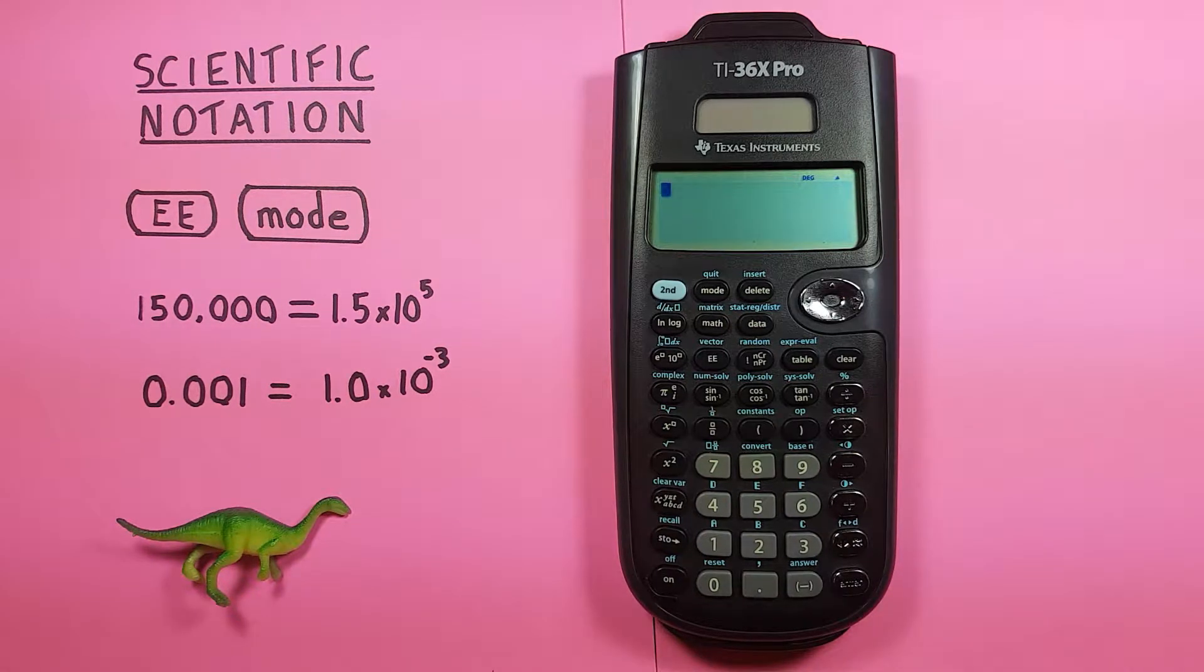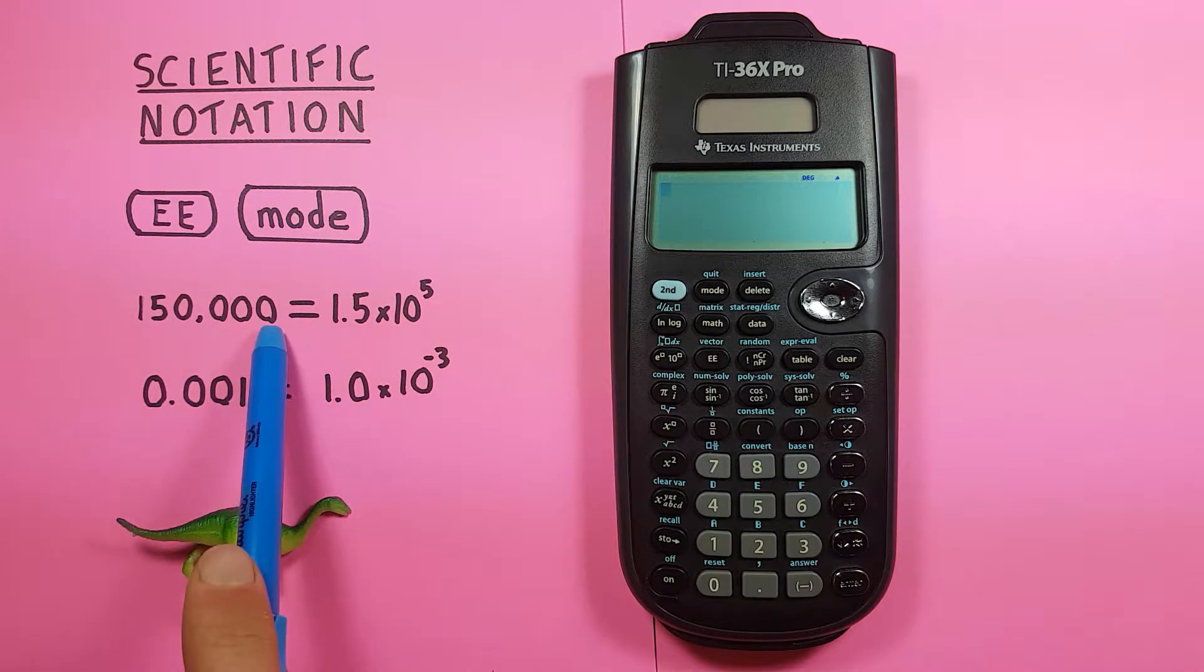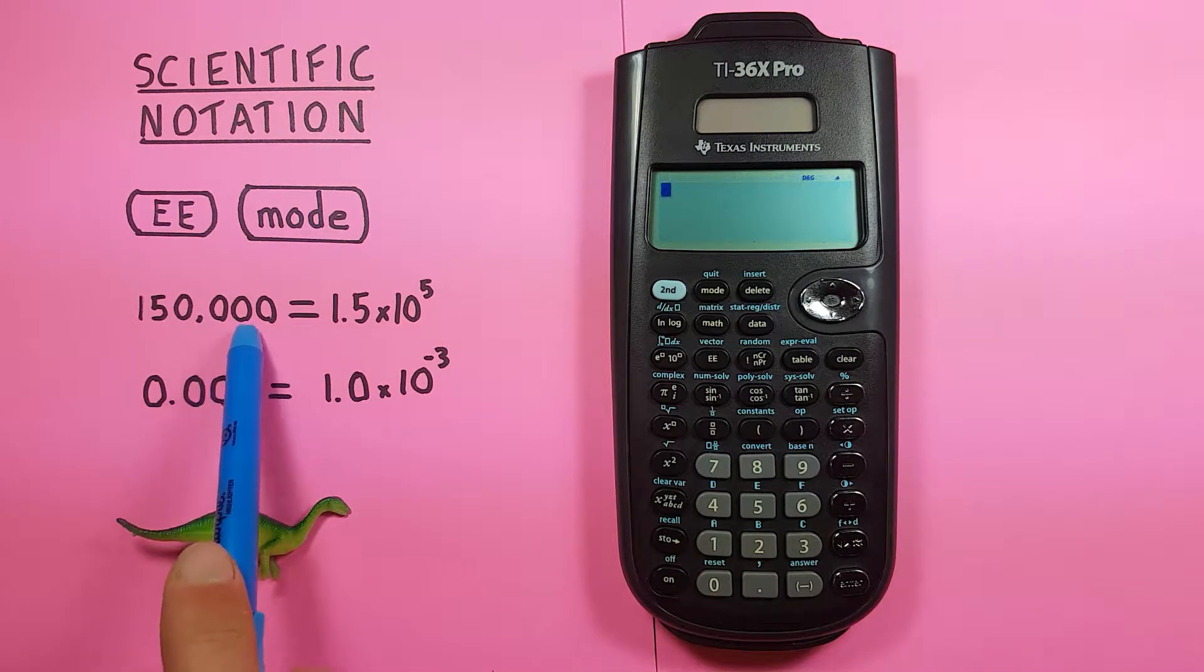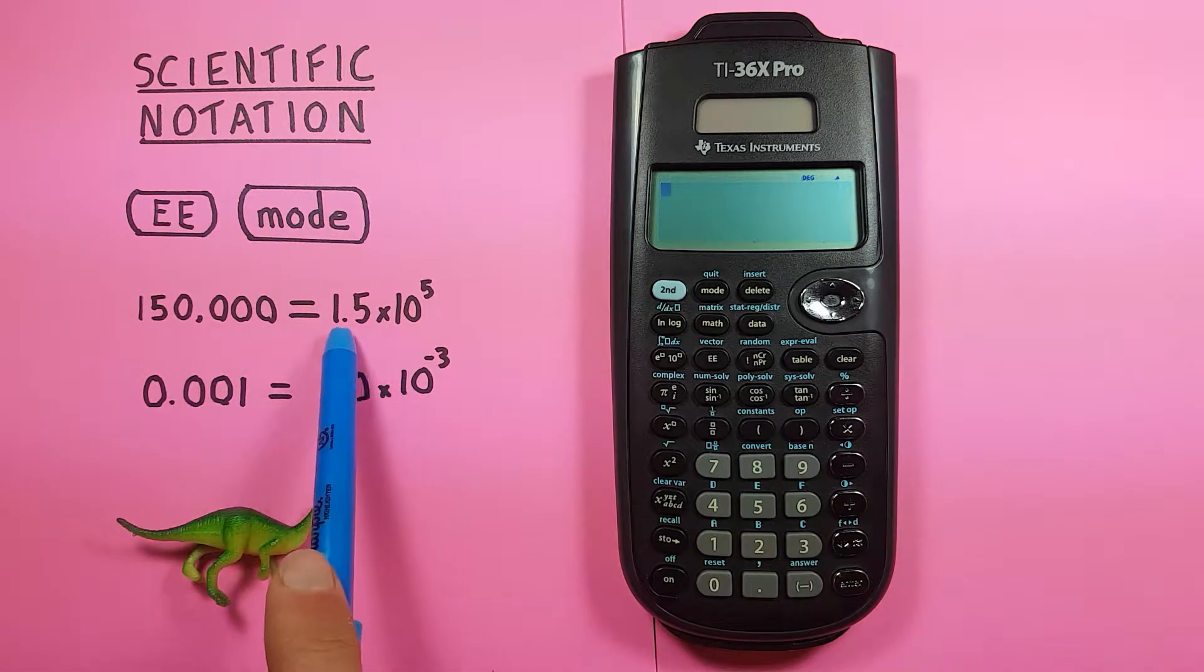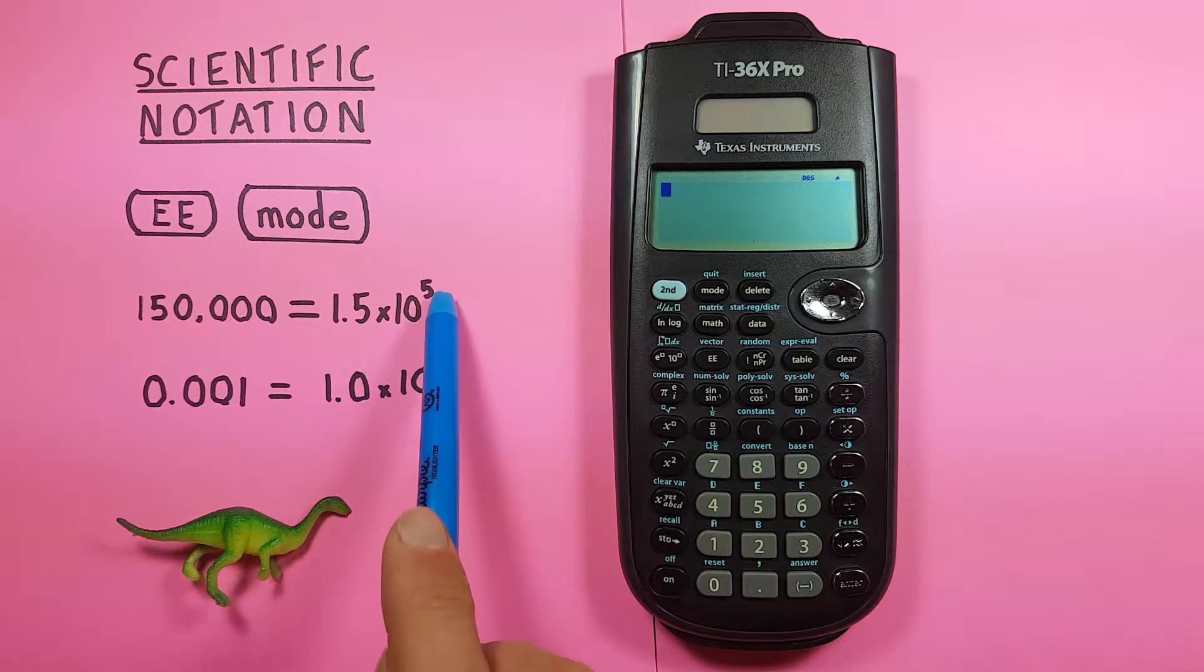So scientific notation is great for simplifying long or complex numbers. For example if we had 150,000 and wanted to write that out in a more compact way, we would want to put it into scientific notation which should look like this, 1.5 times 10 to the power of 5.